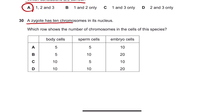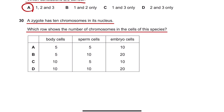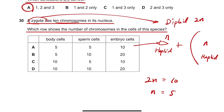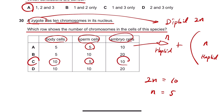Number 30. A zygote has 10 chromosomes in its nucleus. Which row shows the number of chromosomes in the cells of this species? A zygote is diploid (2N) because it is formed by two haploid gametes combining. So 2N = 10, which means N = 5. Sperm cells are haploid and have 5 chromosomes. Body cells and embryo cells are diploid and have 10 chromosomes. The answer is C.